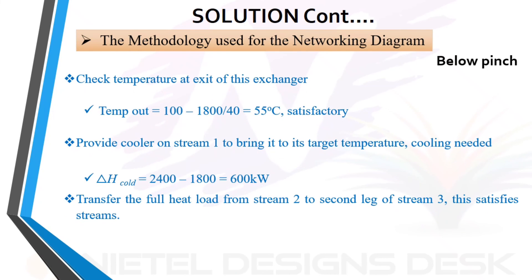Check the temperature at the exit of this exchanger. T_out equals 101 minus 1840 equals 55 degrees Celsius — satisfactory. Provide a cooler on stream 1 to bring it to its target temperature. Cooling needed: H_cold equals 2400 minus 1800 equals 600 kilowatts.